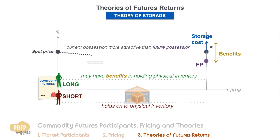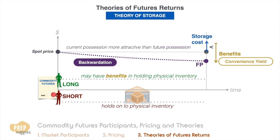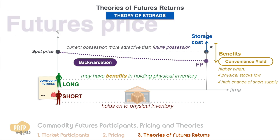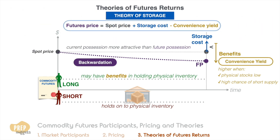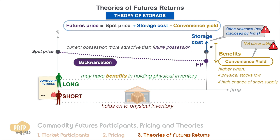Conversely, when the benefits of holding physical inventory outweigh the costs of storage, current possession is more attractive than future possession, spot prices are higher than future prices, and the market will be in backwardation. The benefits of having physical inventory available are referred to as a commodity's convenience yield. The convenience yield is often higher when physical stocks in the market are low and the commodity is likely in short supply. Based on the theory of storage, the futures price equals the current spot price plus storage costs minus the convenience yield. The shortcoming of this approach, however, is that convenience yield — like hedging pressure — is not observable, and storage costs are also often unknown as they are not readily disclosed by participant firms.